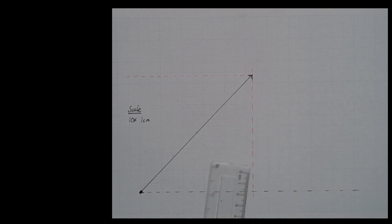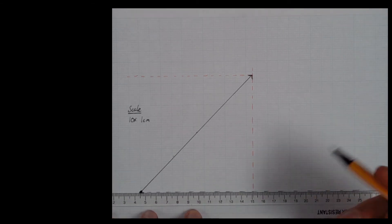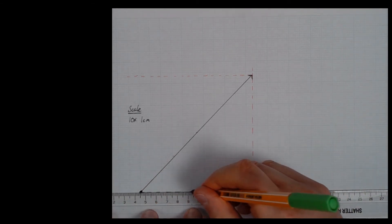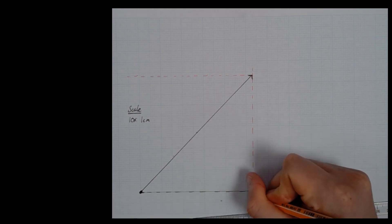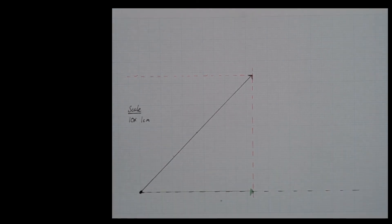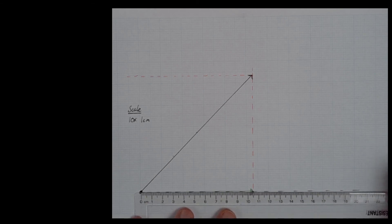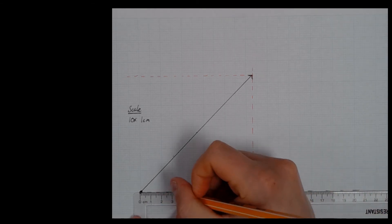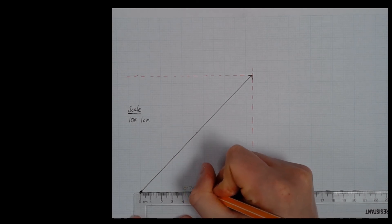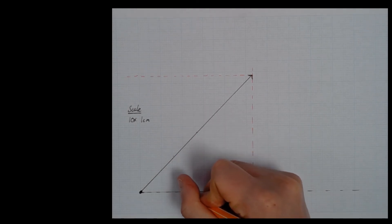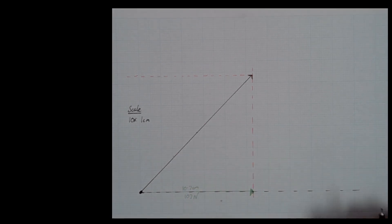To mark in my forces I'm going to use a different colour. The horizontal force is from the starting point to where this dotted line crosses the horizontal down here, so I can draw that in. Make sure I put an arrowhead to show direction because forces are vectors. The length of that line is 10.7 centimetres. With my scale of 1 centimetre to 10 newtons, I can simply multiply by 10 to get 107 newtons.